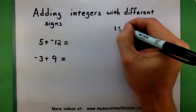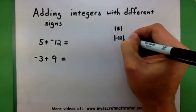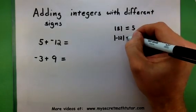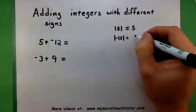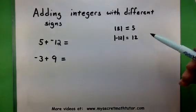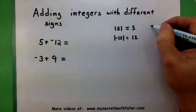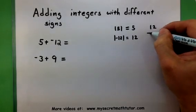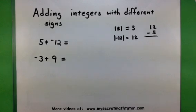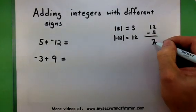The first thing I'm going to do is look at the absolute value of each of these numbers. So the absolute value of 5 is 5, and the absolute value of negative 12 is a positive 12. Now when I look at these, I want to find the smaller one and subtract it from the larger one. So 12 minus 5 will give me an answer of 7.